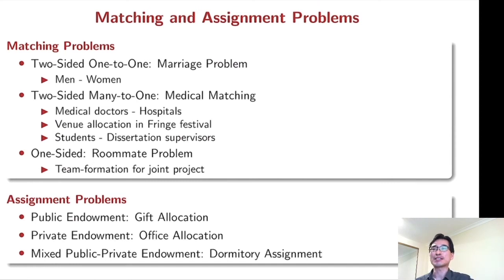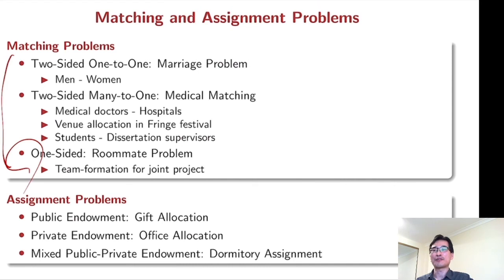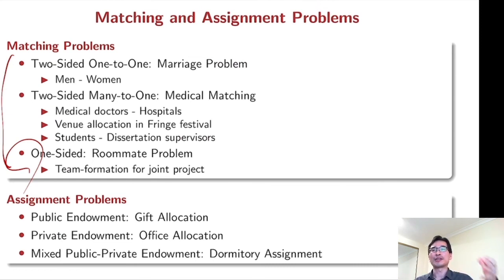One is the matching problem in a narrow sense. In two-sided matching, there are two sides — for instance, men and women in the marriage market, or students and supervisors in supervising dissertations. A player on one side has a preference over players on the other side. In one-sided matching, however, there is no such division — for instance, roommate problems or formation of a team for a joint project. Each player has a preference over all other players, but they are all on one side.